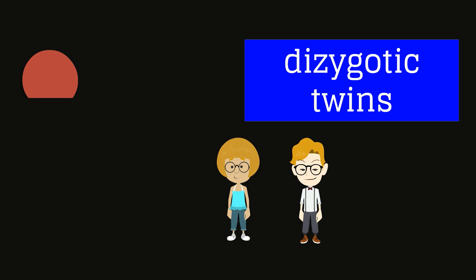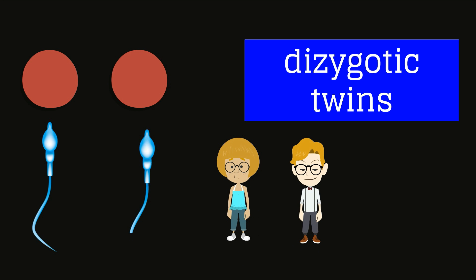Dizygotic twins, known as fraternal twins, occur when two separate ova are fertilized by two separate sperm.